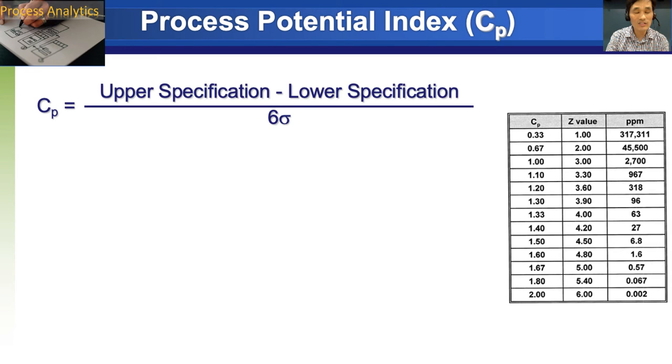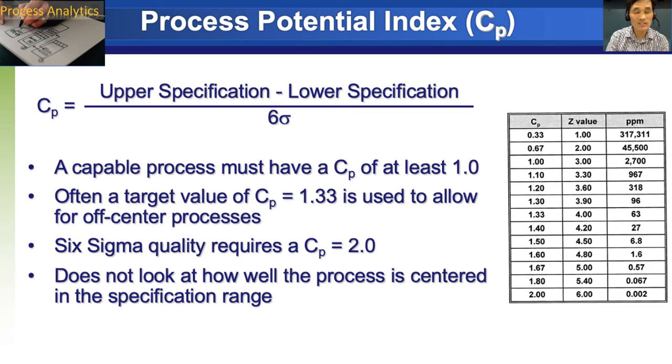Once you calculate the process, you understand how the process is like, then now you can try to calculate how capable the process is. And process potential index is CP that can be calculated first. CP is defined as upper specification minus lower specification divided by six times sigma. And a capable process must have a CP of at least 1.0. And 1.33 is used to allow for off center process is pretty good. Six sigma quality requires a CP being 2.0. And this table also provides you a good understanding of what CP means.